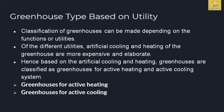Greenhouse types based on utility are classified into two categories: greenhouse for active heating and greenhouse for active cooling. This classification is based on functional utilities — depending on the environment, the greenhouse needs either a heating or cooling system. Artificial cooling or heating structures are present in these greenhouses but are more expensive and elaborate.